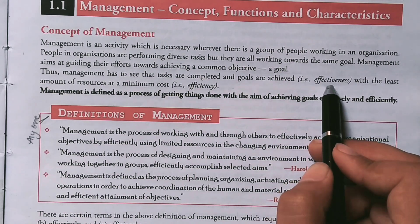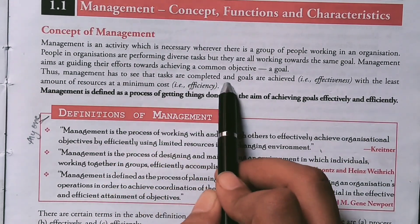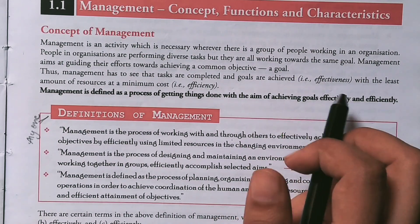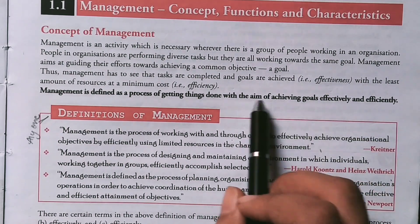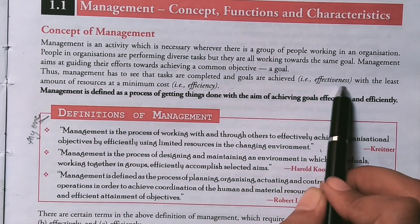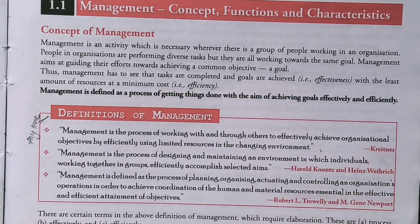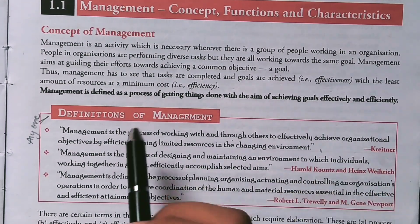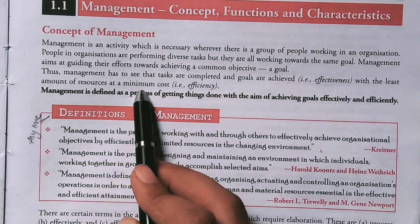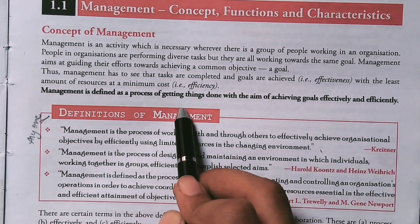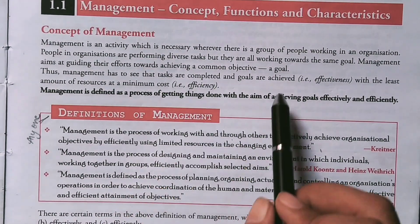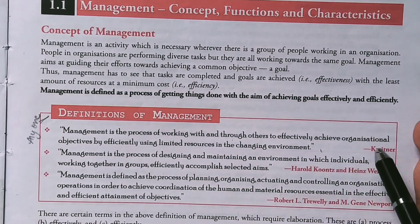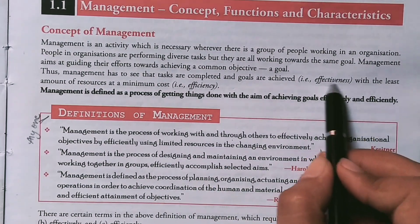Management has to see the tasks are completed and the goals are achieved — that is effectiveness of our objectives. If we complete a task and objectives with limited resources and minimum cost to achieve, then we call it efficiency. So if I say in general, efficiency is a wider concept as compared to effectiveness.